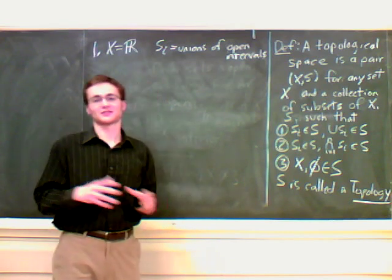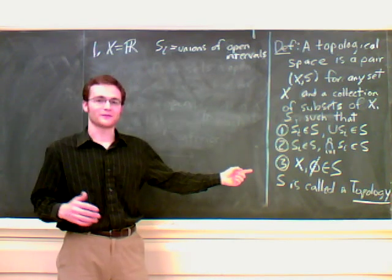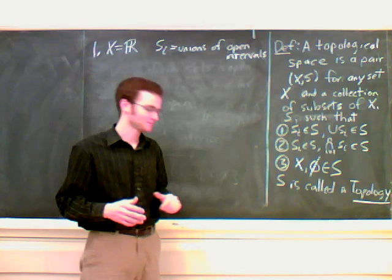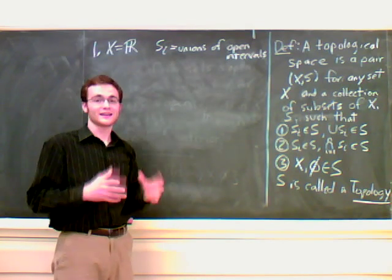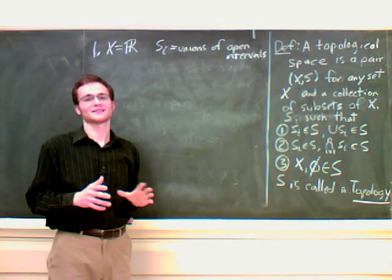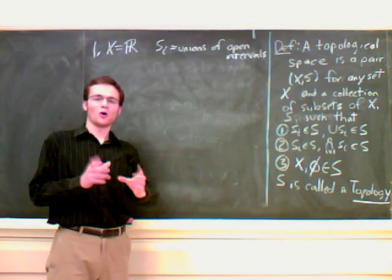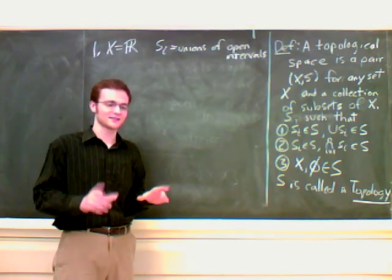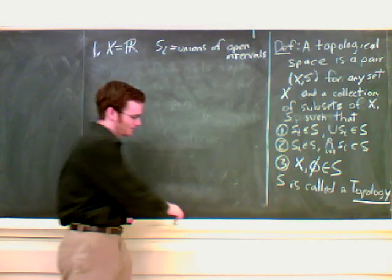The second one, that the finite intersections is still an open set. Again, the last lecture we proved that it works out. The third one, since we defined R and the empty set to be open intervals, of course those are also in our set. So S, which is made up of all these S_i's, which are unions of open intervals, is a topology on the real line, and X with S is a topological space. An interesting property here is that you can think of open intervals as kind of the building blocks of everything else that is created here, all the other open sets. So we call these open intervals a basis for the topology, because everything else can be constructed off of those.